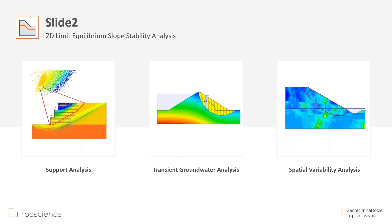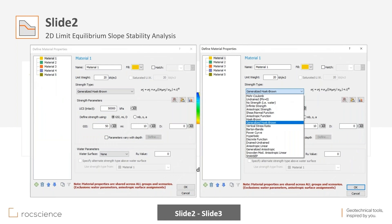One of the very famous tools that we have is our Slide 2 program, which is used for 2D limit equilibrium slope stability analysis based on the method of slices. You can do slope stability analysis, statistical and spatial variability analysis, lots of statistical analysis, and support design. One of the key components of each model we make in Slide 2 is our material models and how we represent their shear strength in the simulations.